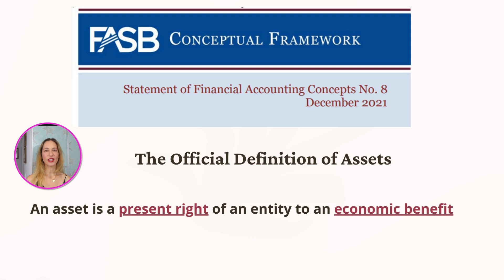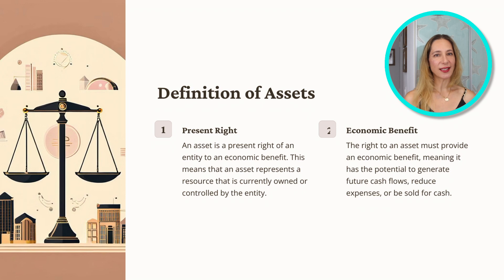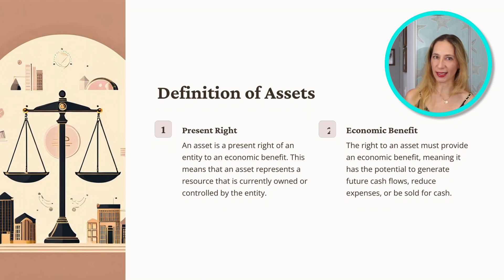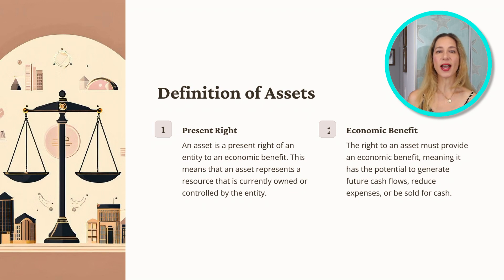The official definition of assets as issued by the FASB in the Statement of Financial Accounting Concepts No. 8 is: an asset is a present right of an entity to an economic benefit. Per this definition, an asset has the following two essential characteristics: it is a present right, and that right is to an economic benefit.